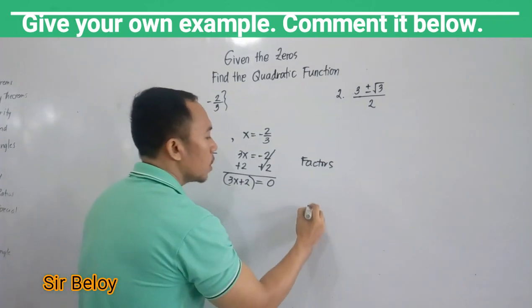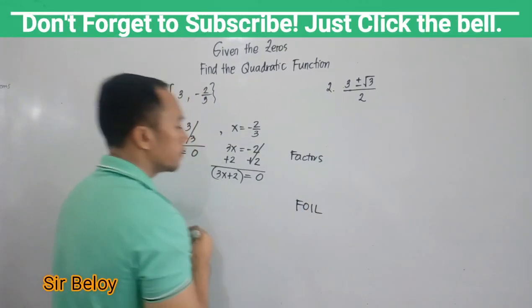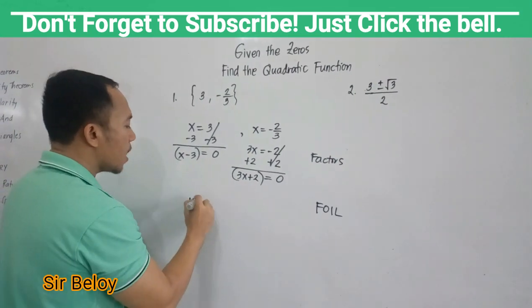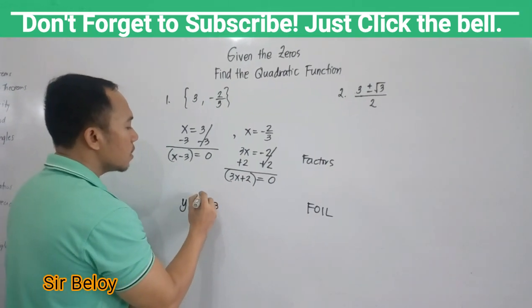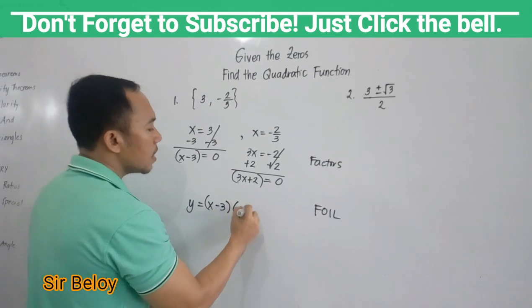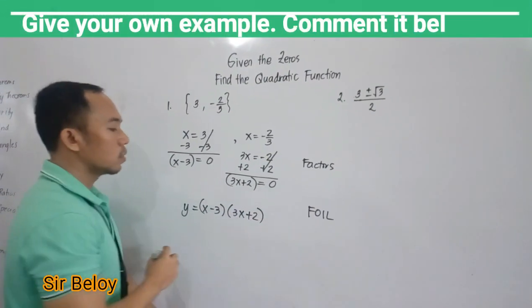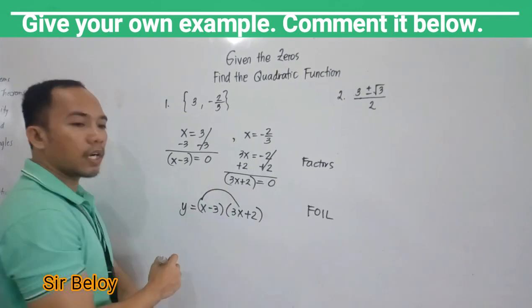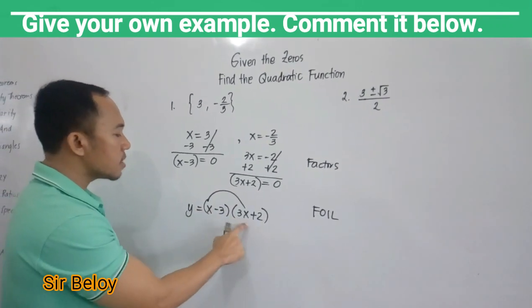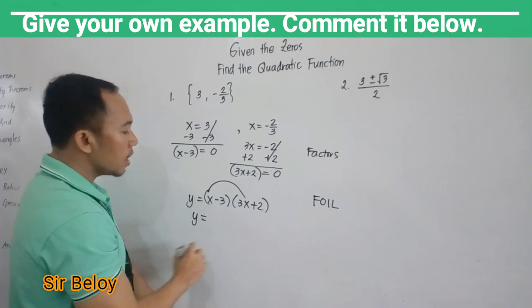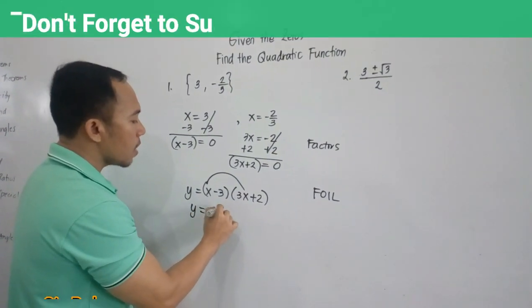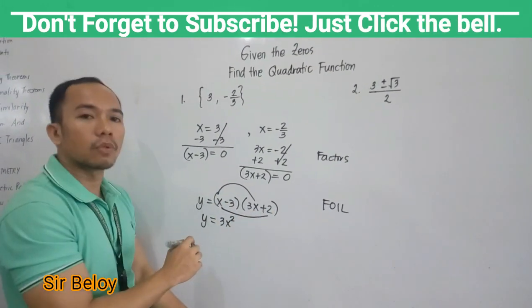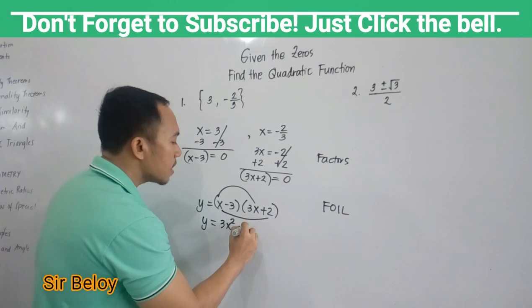Then we will use FOIL method. So FOIL method, you need to multiply these two. You have Y equals (X minus 3) times (3X plus 2). So using FOIL method, you will multiply the first terms. So you have X times 3X. You have Y equals 3X squared. For outer, you have X times positive 2. You have positive 2X.